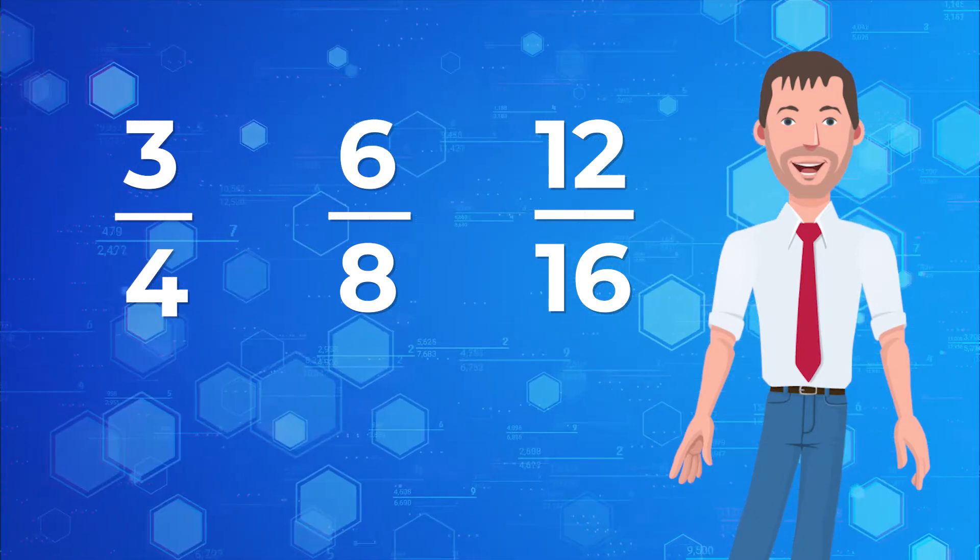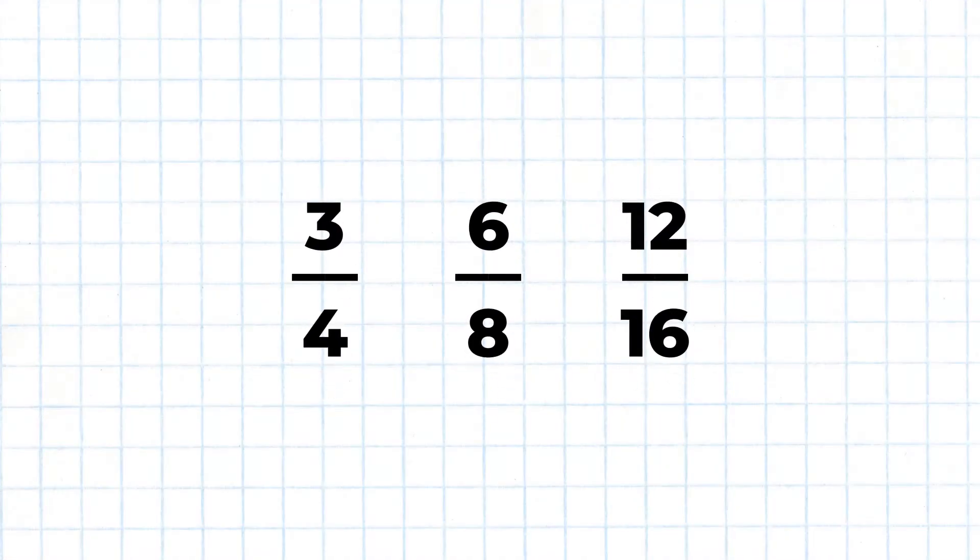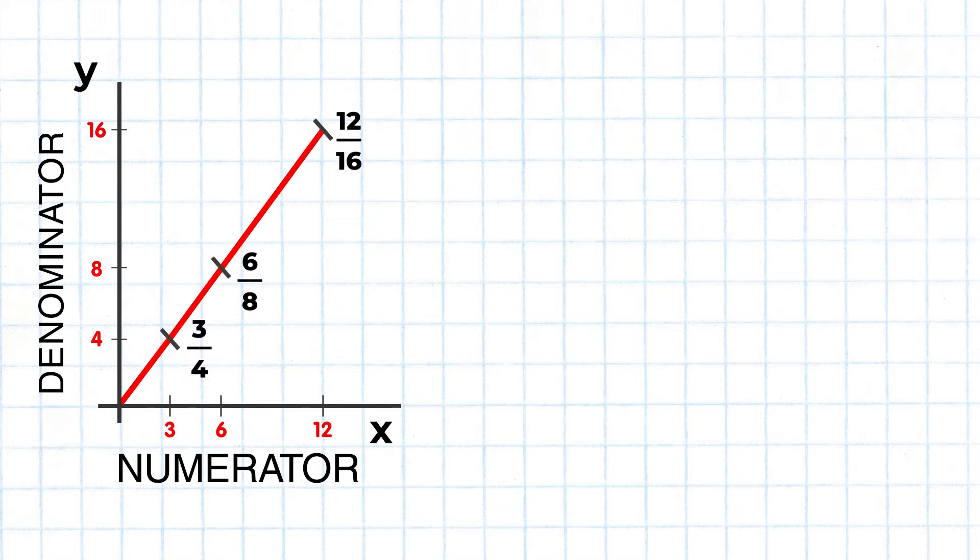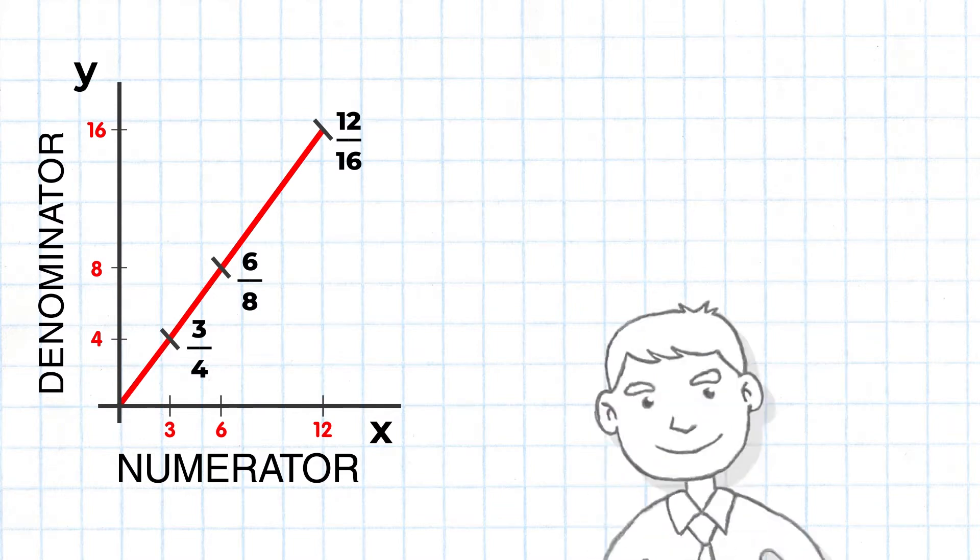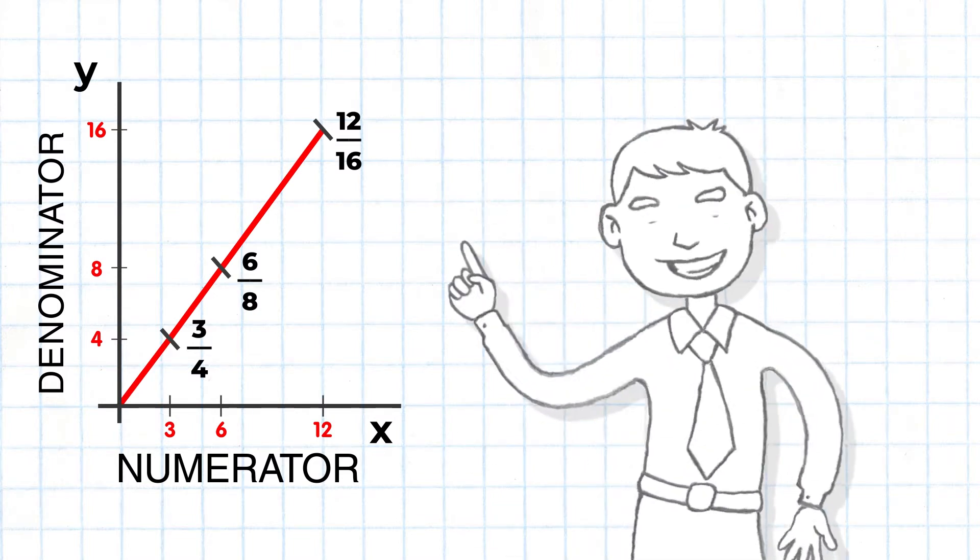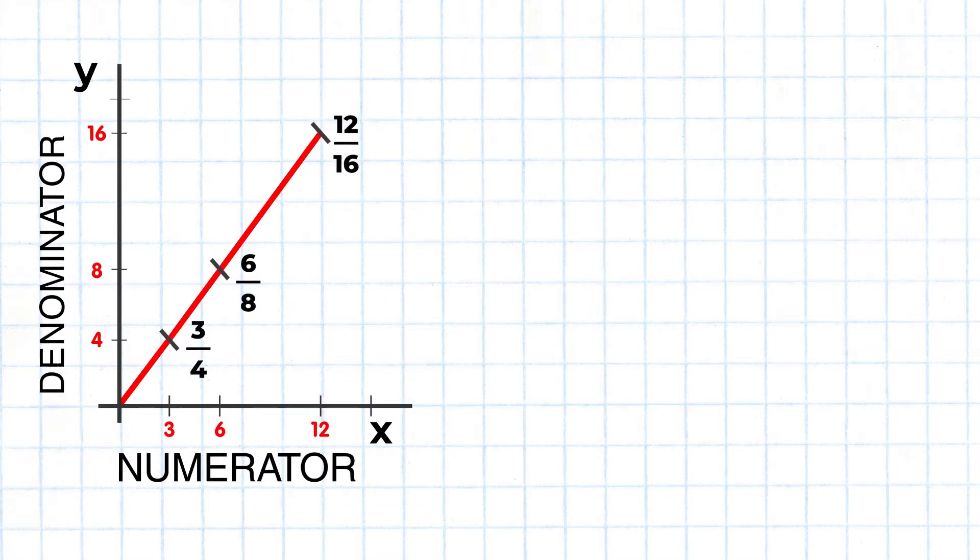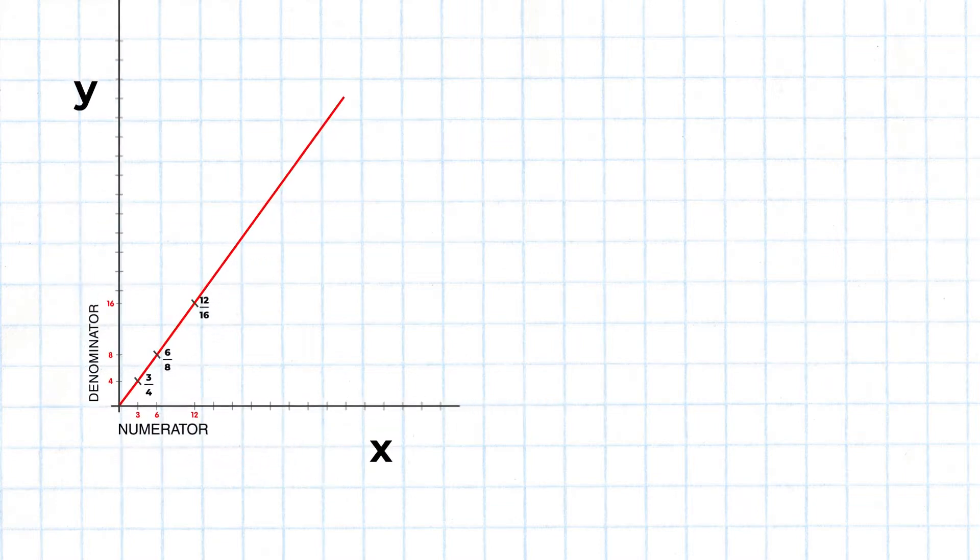We can plot these fractions on a 2D graph. The top part called the numerator would be a point on the horizontal line X, and the bottom of the fraction, the denominator, would be found on the vertical line Y. We can draw a straight line through the intersection points of each of our fractions, and this line seems to have the same upward lift everywhere. This graph shows us how the numerator is related to the denominator. Since the slope is the same everywhere in the graph, we know that all three of our fractions are equivalent—both the numerator and the denominator grow in the same exact proportions.